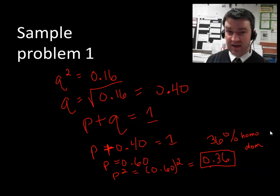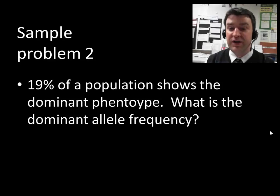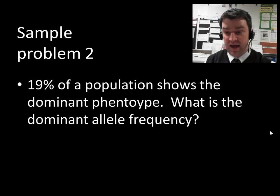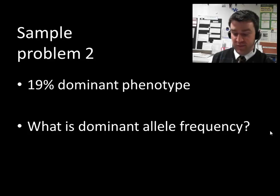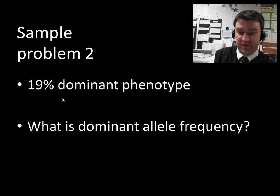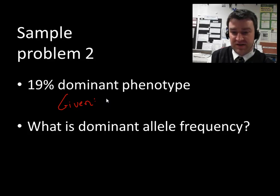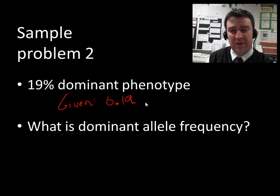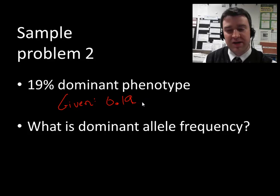So that's working through one simple problem. Again, to me, the key of working through these is thinking about what you're given and thinking about where you're trying to get to. Let's do another practice problem. So what if we know that 19% of a population shows the dominant phenotype? And I wanted to know what the dominant allele frequency is. So let's think about what we're given and what we're trying to find. So if I break this up again, think about what you're given, think about where you're trying to go. I am given that 19% show the dominant phenotype. So let's convert that to a decimal right away, 0.19.